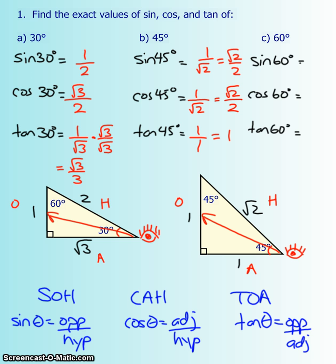For 60 degrees, we return to the scalene triangle but look from the 60-degree angle. The opposite side is now root 3, the hypotenuse is still 2, and the adjacent is 1. So sine 60° = root 3 over 2, cos 60° = 1/2, and tan 60° = root 3 over 1, which simplifies to root 3.